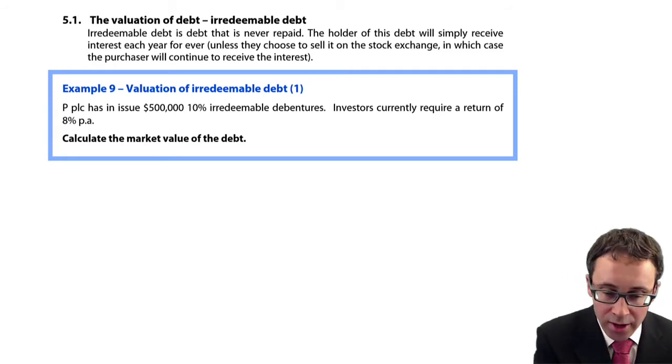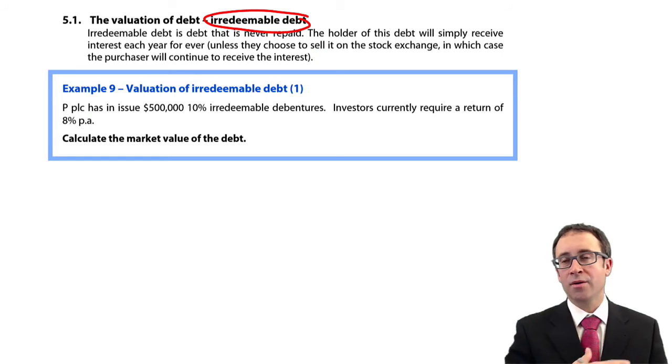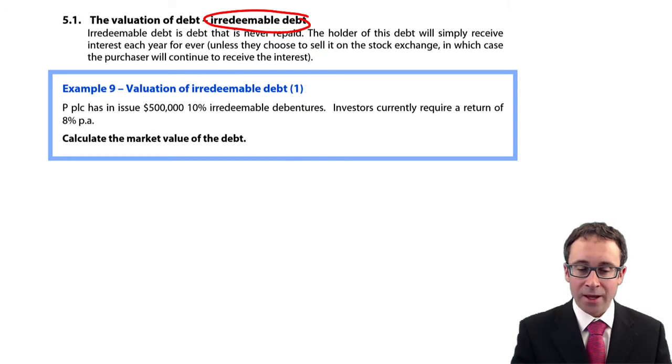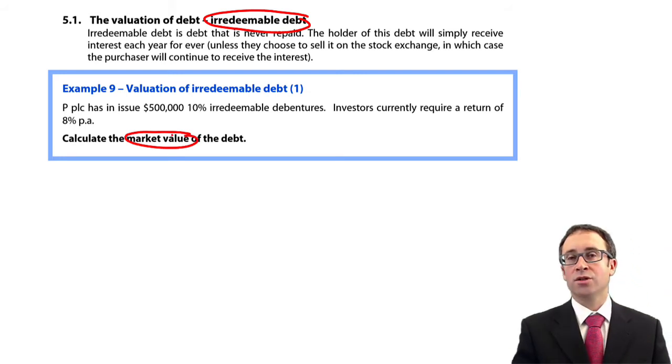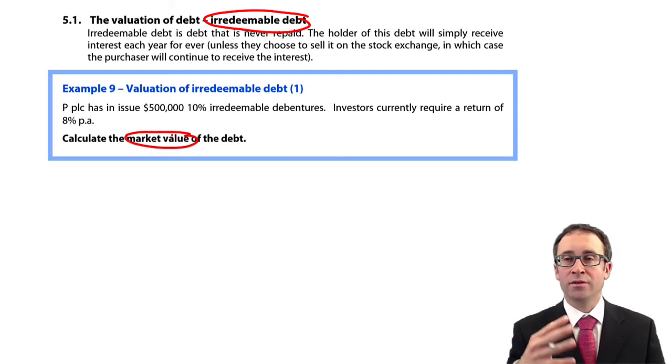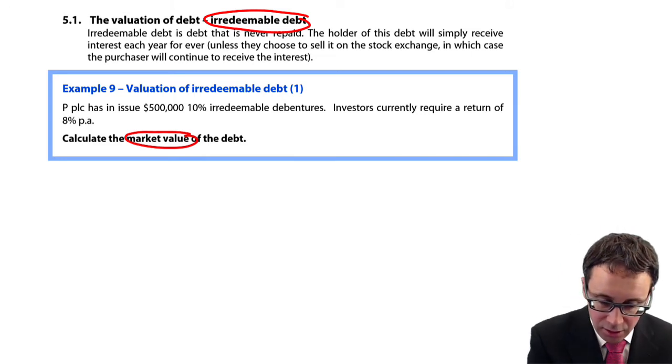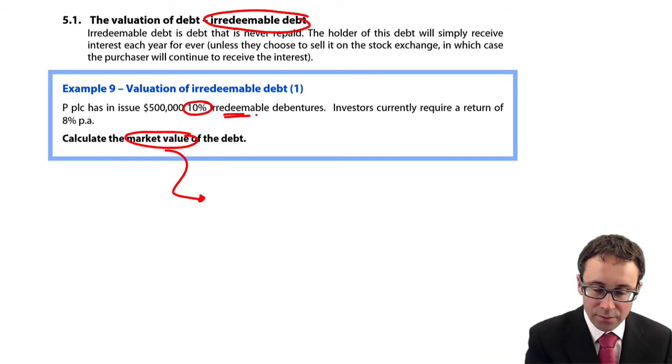The first one is looking at irredeemable debt. When working out the value of your irredeemable debt, you have a perpetuity from one to infinity. To work out the market value of your debt, you take the interest and multiply it by a perpetuity factor, which is one divided by the discount rate.